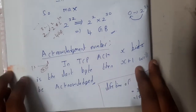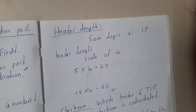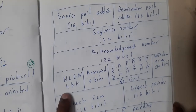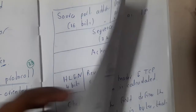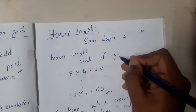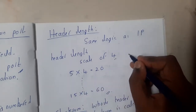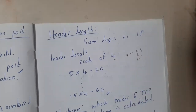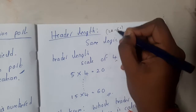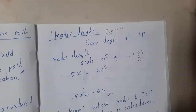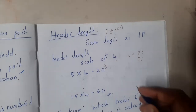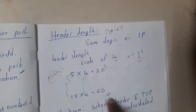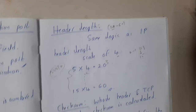The header length field, similar to the HLEN in IP, is 4 bits. With a scale factor of 4, the 4-bit number ranges from 0 to 15. The initial values — 0, 1, 2, 3, and 4 — are invalid because the minimum header length must be 20 bytes. Valid values are 5 to 15, corresponding to 20 to 60 bytes (scale of 4).